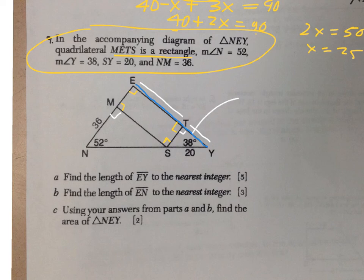Well, let's get TY first. In that right triangle right there, I'm looking for the adjacent side and I've got the hypotenuse. So I can use cosine to figure that out.